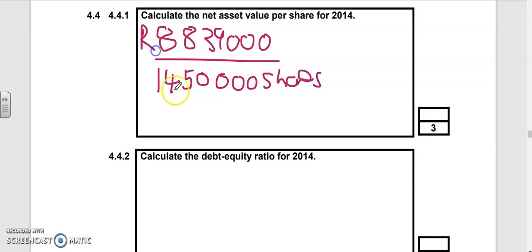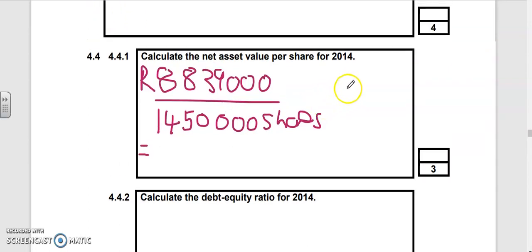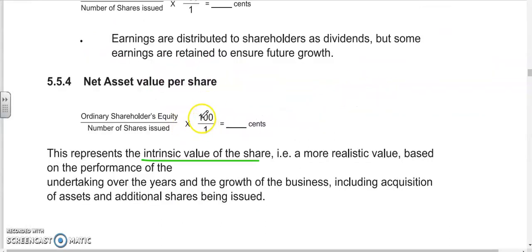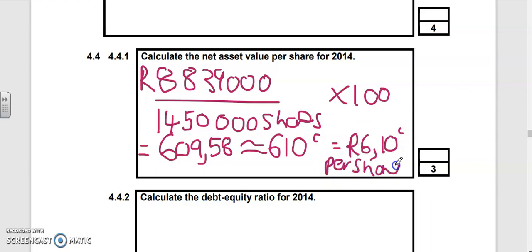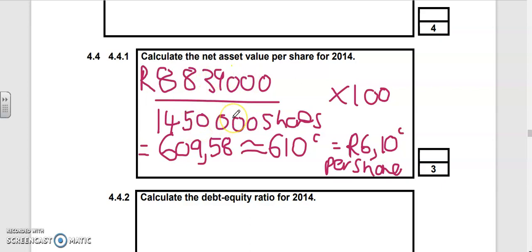You divide this - take your calculator, eight eight three nine, and divide by 1450, remember times 100. I get 609.58. This answer is always in cents: six hundred and ten cents, which is effectively R6.10 per share. That's your net asset value per share.